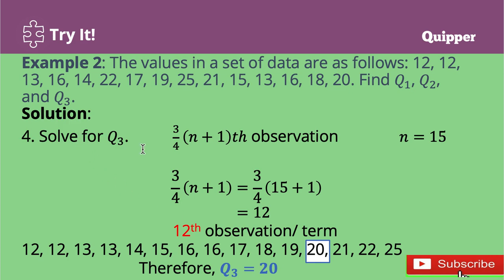Lastly, solve for the third quartile. Q3 is found at the three-fourths of (n + 1) observation. So three-fourths of (15 + 1) = three-fourths of 16 = 12 (since 3 × 16 = 48, and 48 ÷ 4 = 12). Q3 is found at the 12th observation. In the arranged set of data, the 12th observation is 20. Therefore, Q3 = 20.